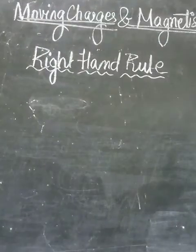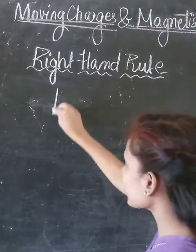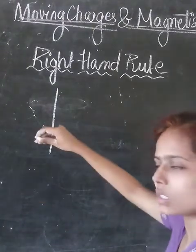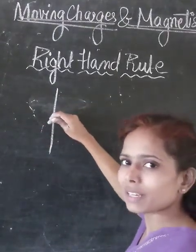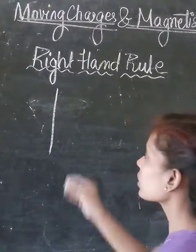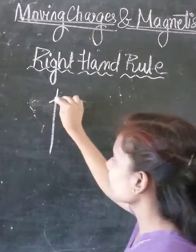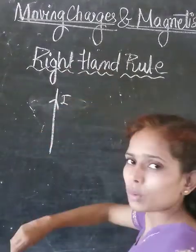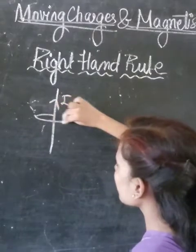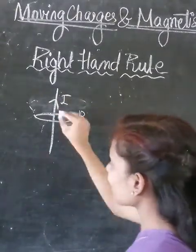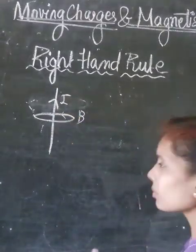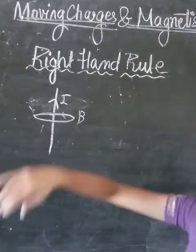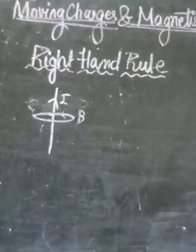Whenever there is a current-carrying conductor, like this one, with a current flowing through it — meaning the charges are in a moving condition — it will produce a magnetic field around it. If the current is flowing from bottom to top, the magnetic field will be shown around it, and its direction is determined using the right-hand rule, since the current and magnetic field are related to each other.